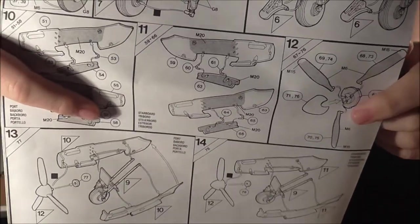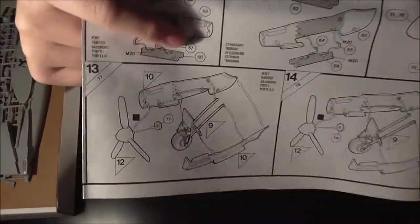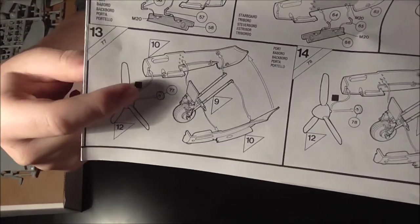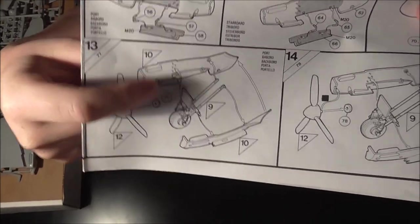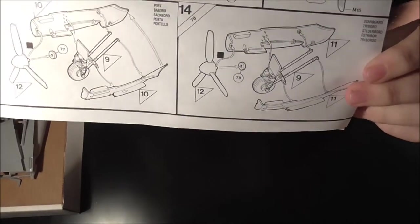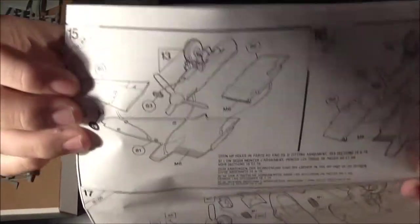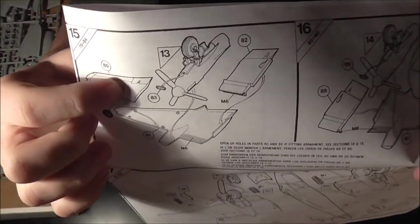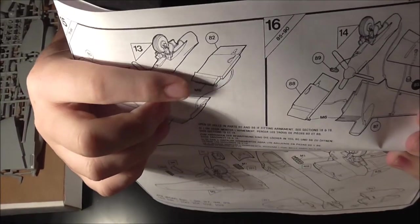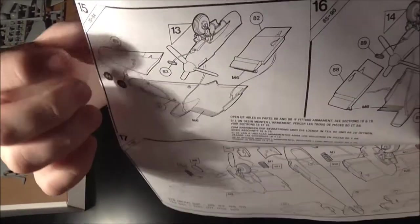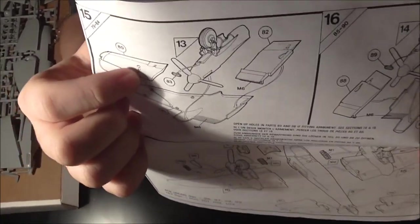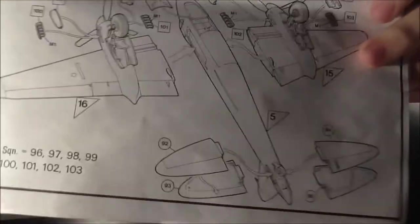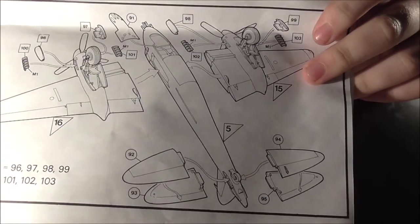And again, eleven, then twelve is the prop getting put together. Thirteen, the prop going onto the engines with the wheels going on as well. And fourteen, showing the other side. Then we have fifteen, showing the wings going together. It's a bit of a weird way they've actually done the inboard underside of the wings. Separate from the outboard, but, however, that's how they did kits back then. And again, same on the other side. And on the bottom, everything else going together.